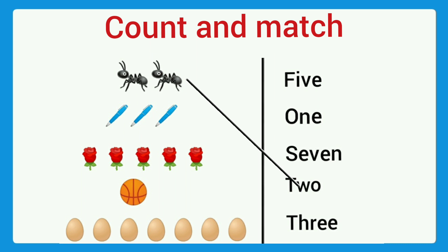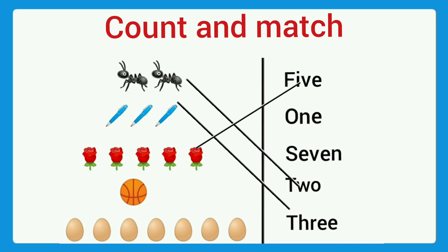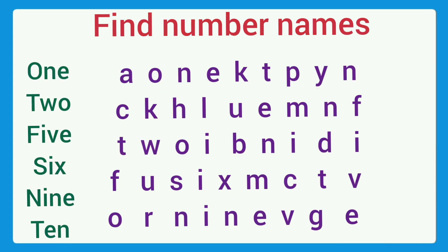Next: count and match — how many arms are here? Match it. Next: one, two, three — pen — match to three. Next: one, two, three, four, five flowers — match to five.